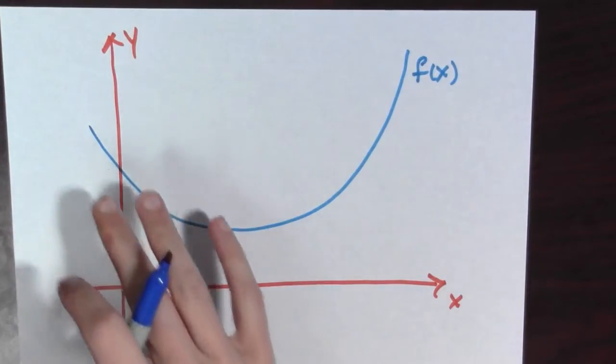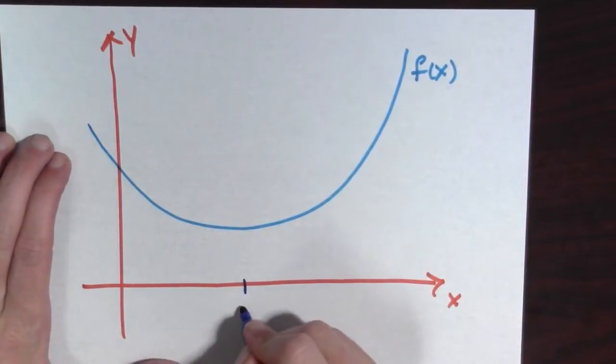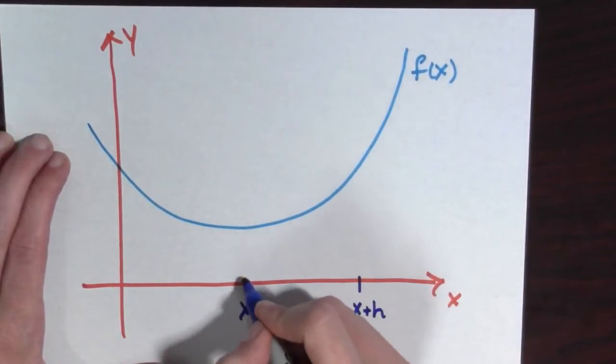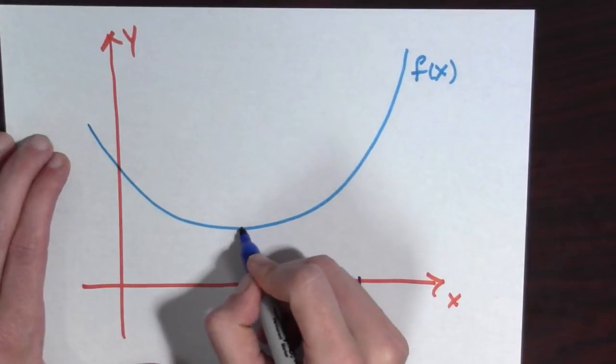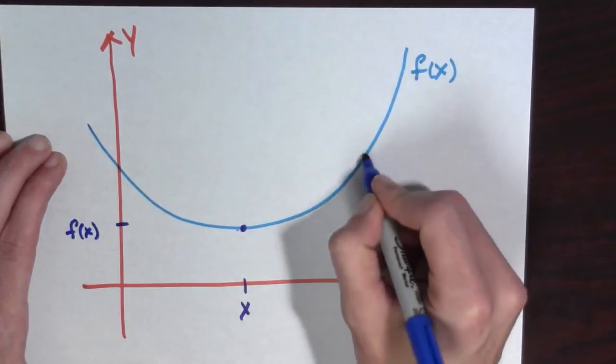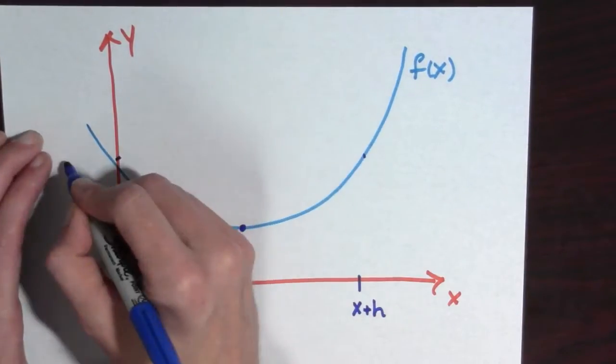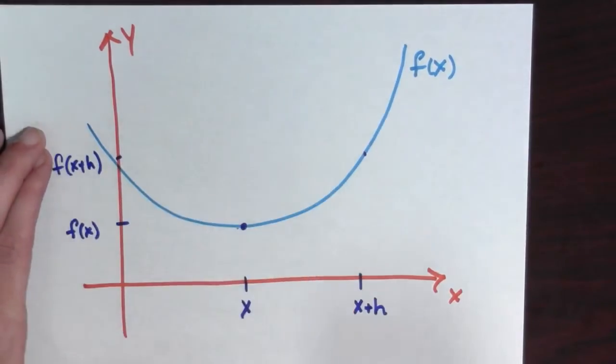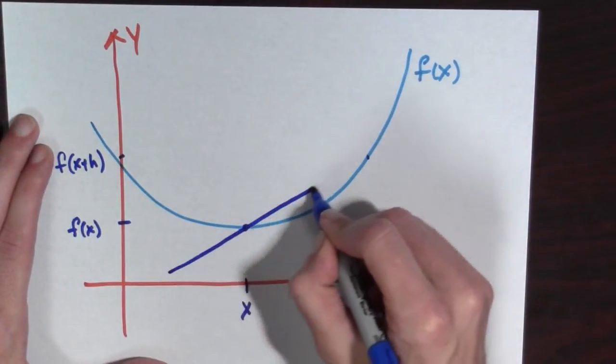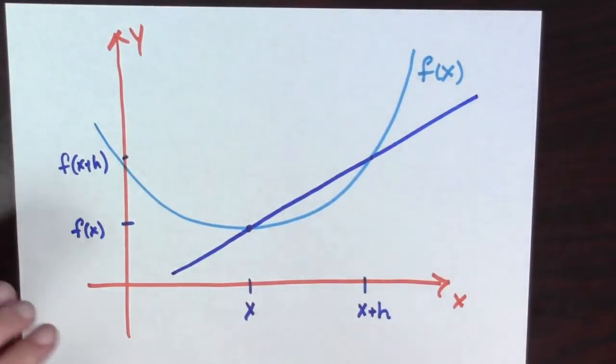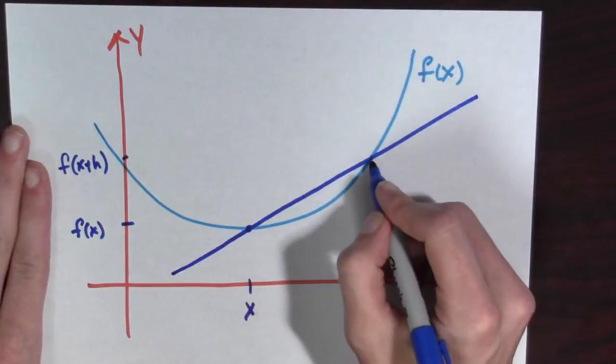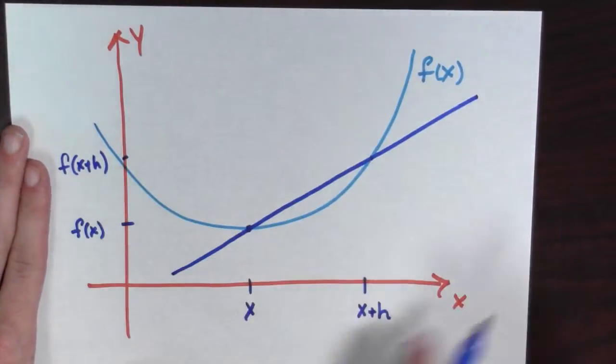So here I have a curve f of x and here I have a point x and a point x plus h. And if we move up here, we see that this corresponds to f of x and go up to here, this corresponds to f of x plus h. And I want to know the slope of this line. Well look, we've already said that all we need to look at is